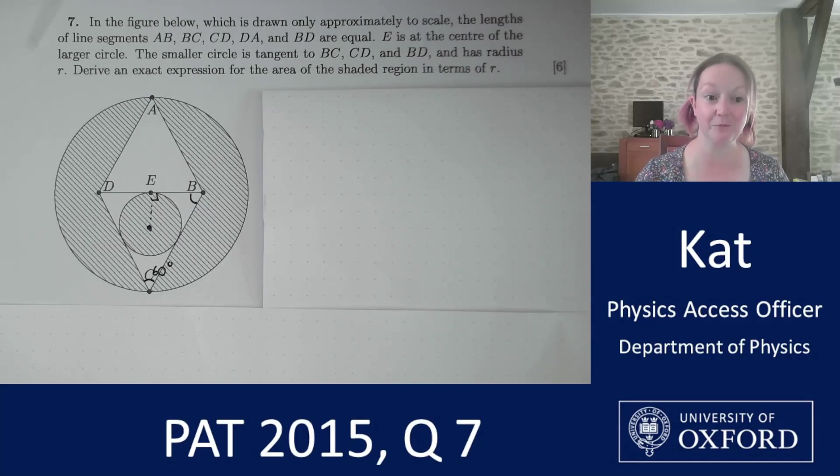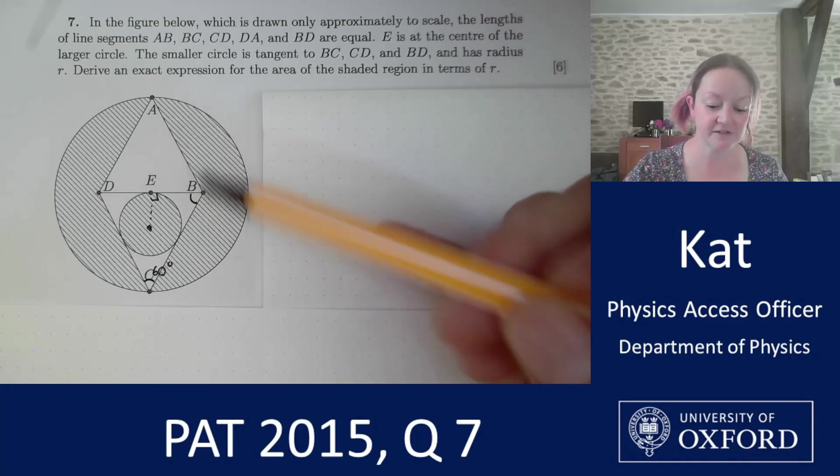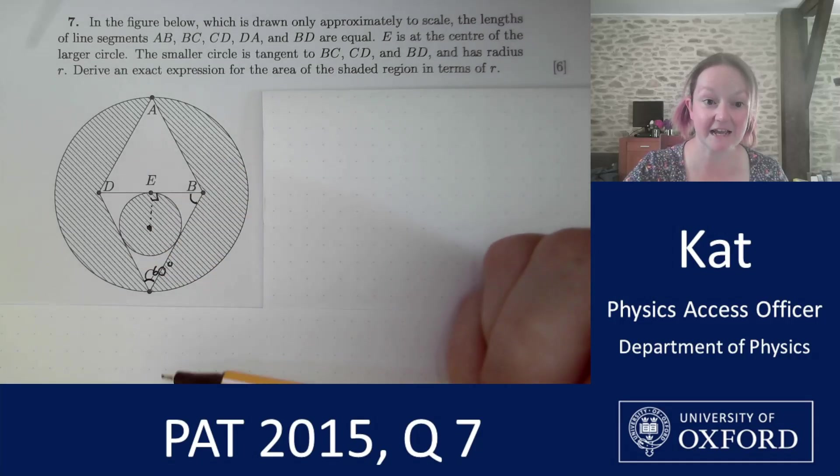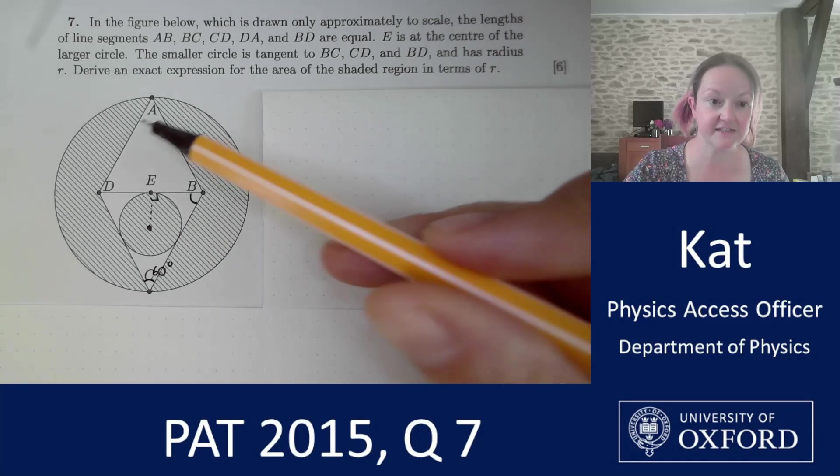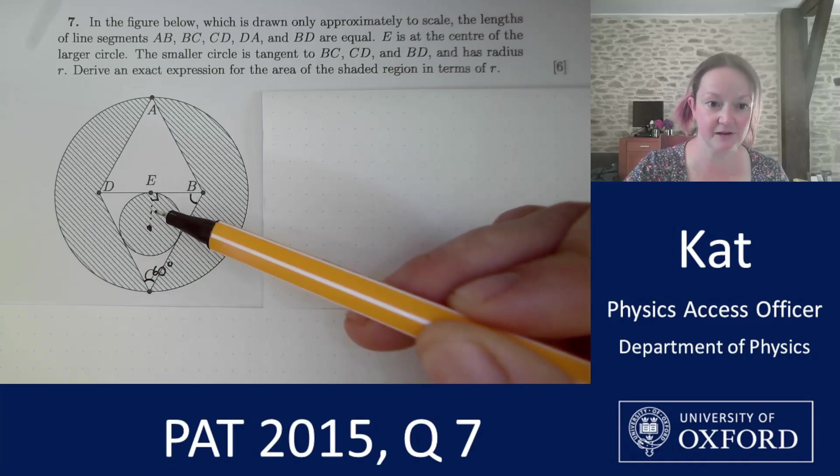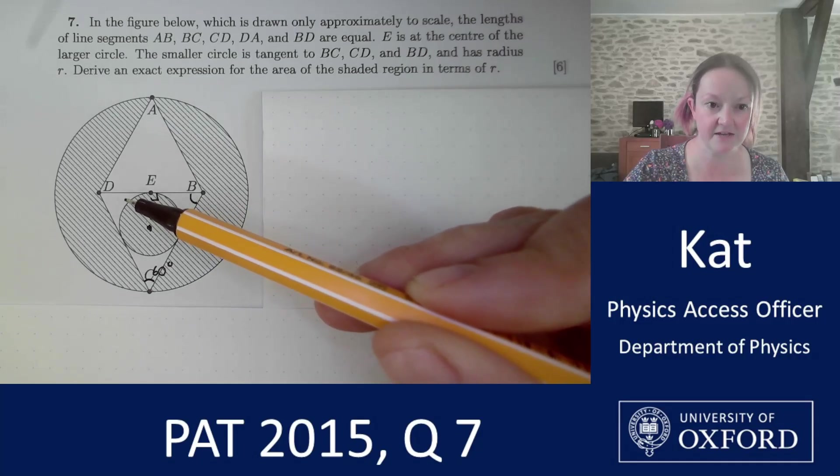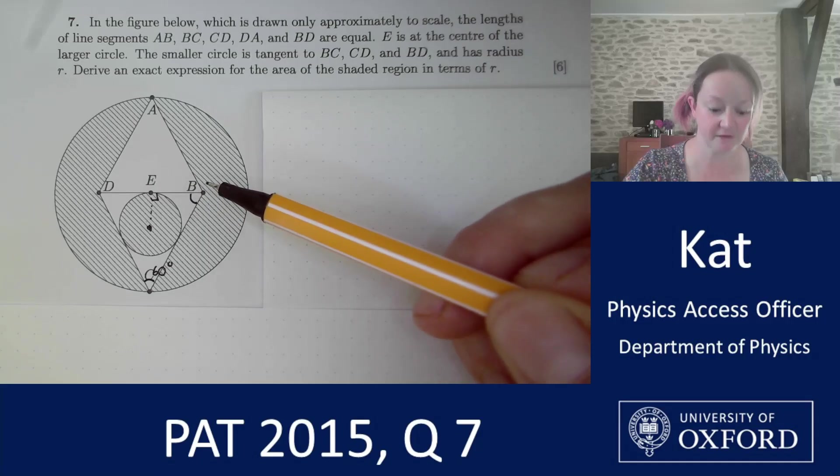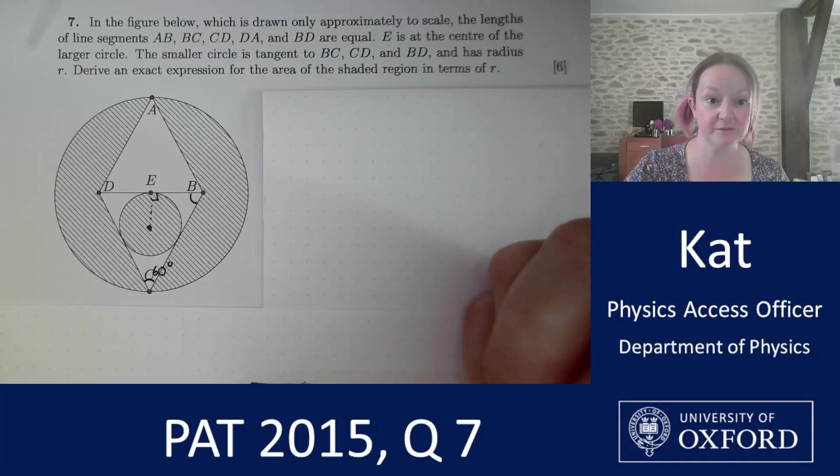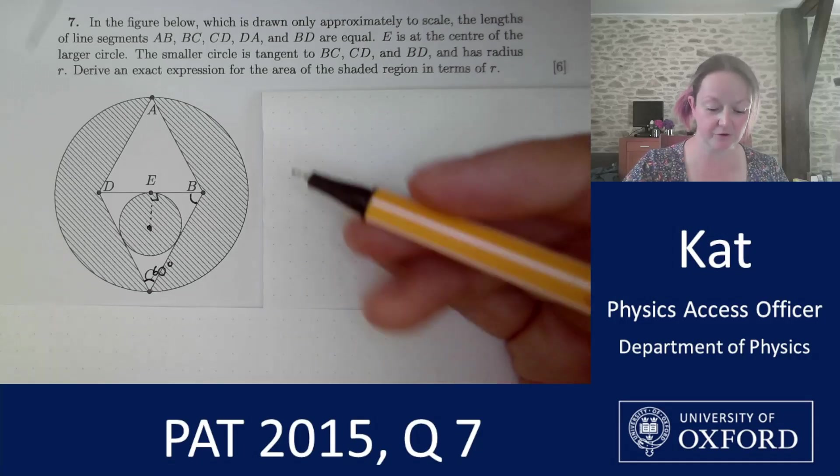Question 7 is a geometry question. We're given a diagram below. You can see I've already started putting on a few bits of information on mine and it tells us that it's only approximately to scale. It tells us that the lengths AB, BC, CD and DA are all equal. It tells us that E is at the centre of the larger circle. It tells us that this smaller circle is at a tangent. You can see that's why I've dotted in my radius and my right angle up to E. It's at a tangent to all three of these lines which means that triangle BCD must be an equilateral triangle so each of these angles must be 60 degrees. And we're asked to derive an exact expression for the area of the shaded region in terms of R.